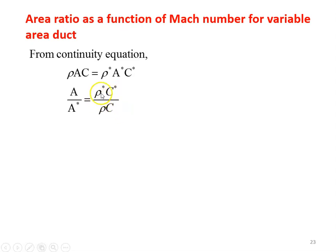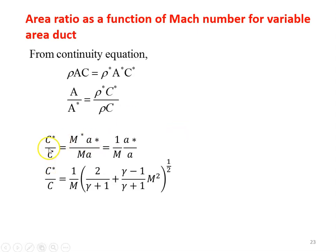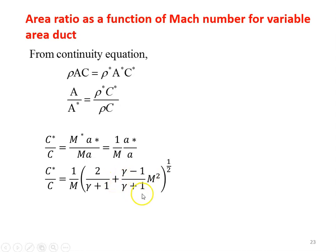Here ρ* is the density at the critical condition, C* is the velocity at the critical condition, and ρ and C are the density and velocity in normal flow conditions. Now we find C*/C. C* equals M* times a*, and C equals M times a. M* is the Mach number equal to 1, and a*/a is the ratio of acoustic velocity at critical condition to acoustic velocity at normal condition. Already we derived the a*/a equation. Substituting, C*/C equals (1/M) × [2/(γ+1) + (γ−1)/(γ+1) × M²]^(1/2).